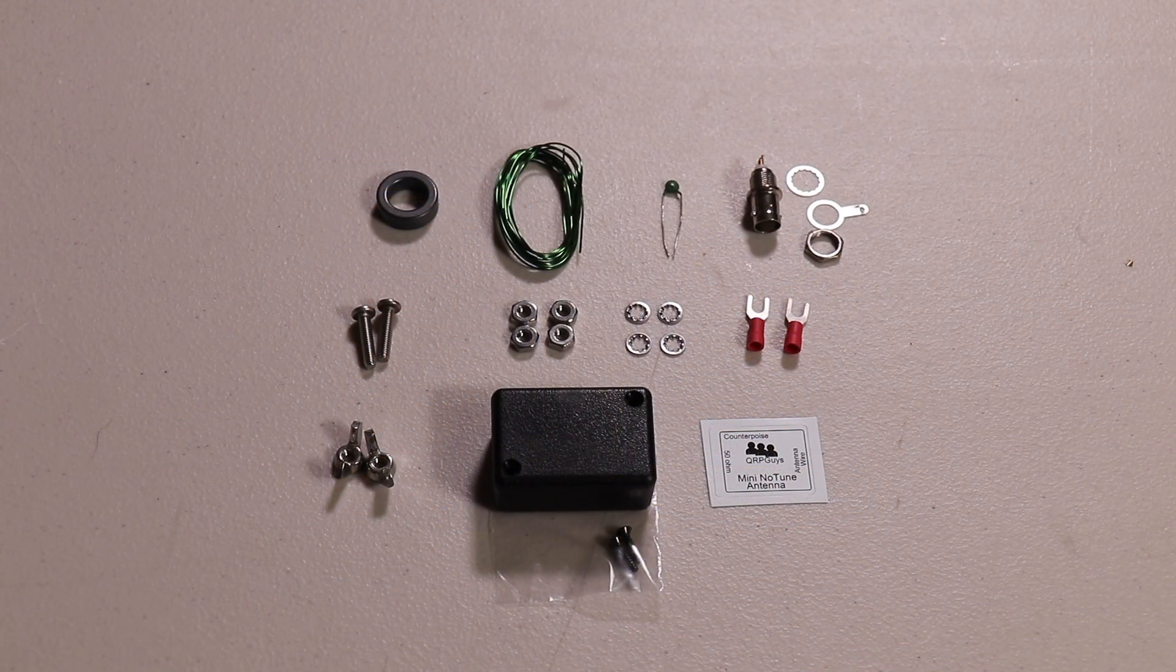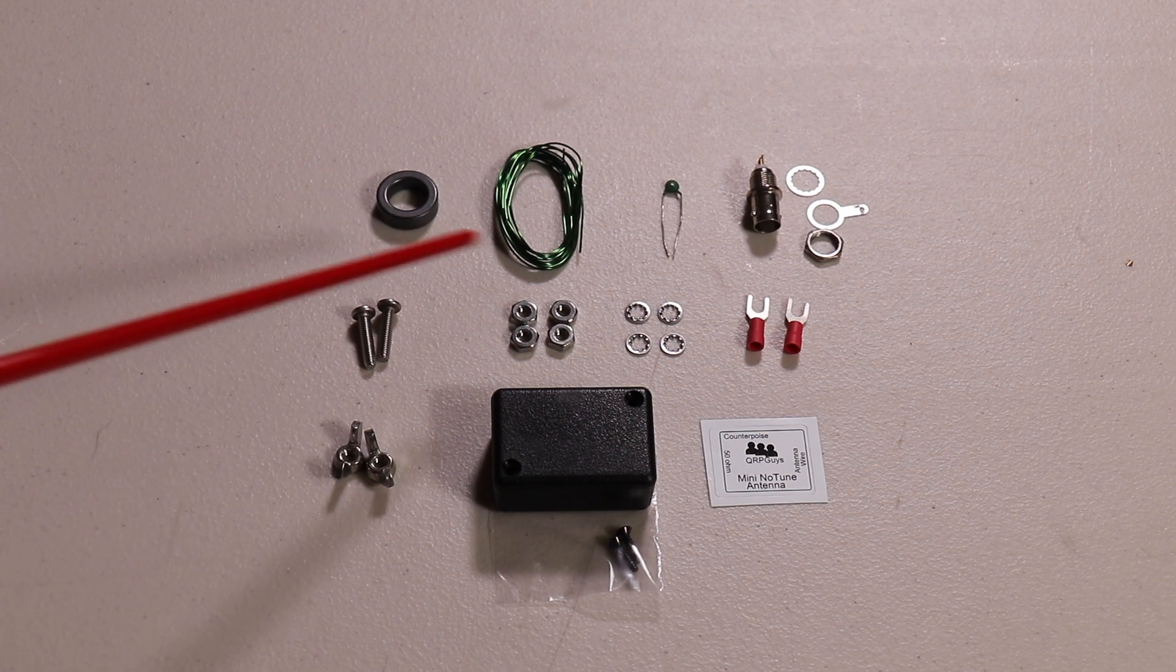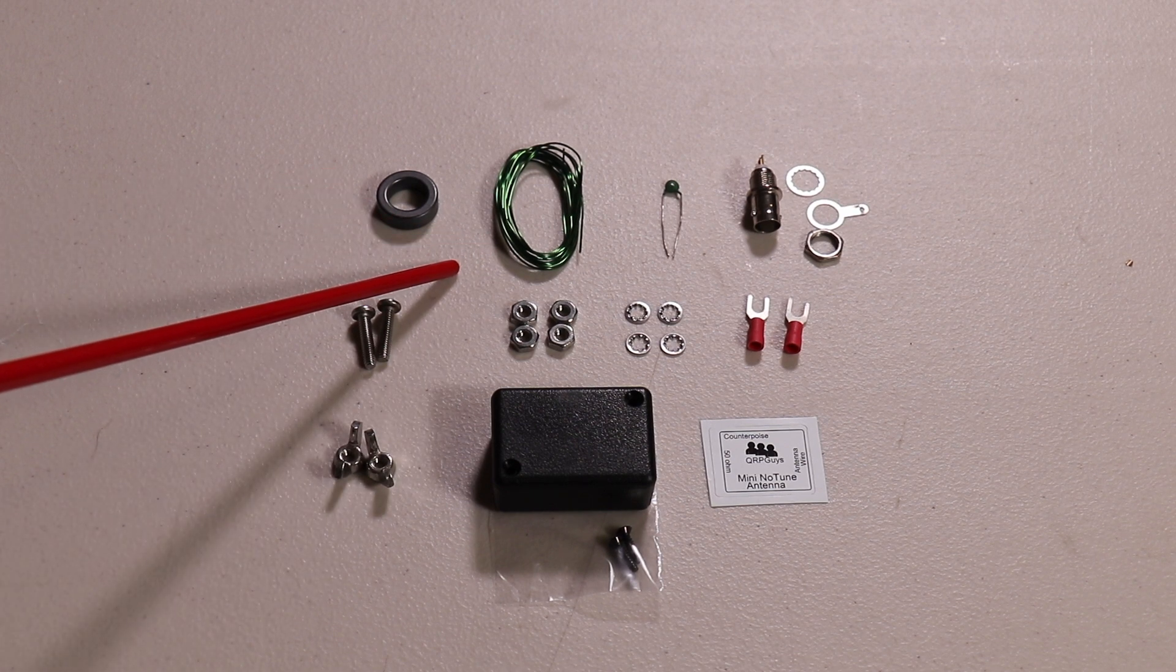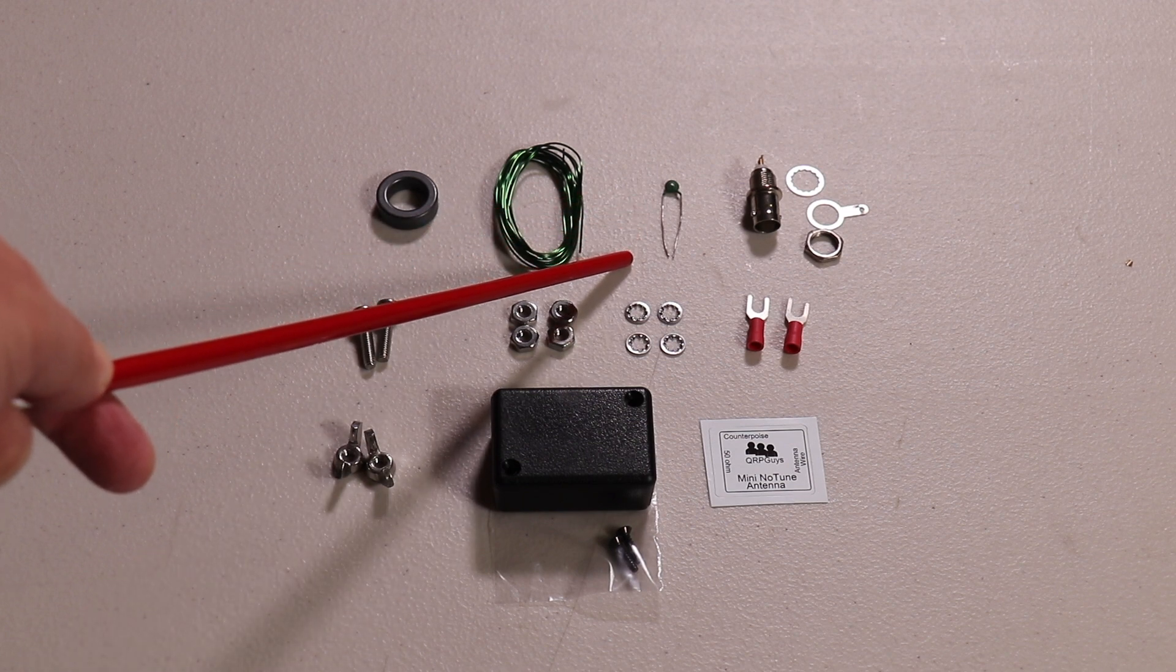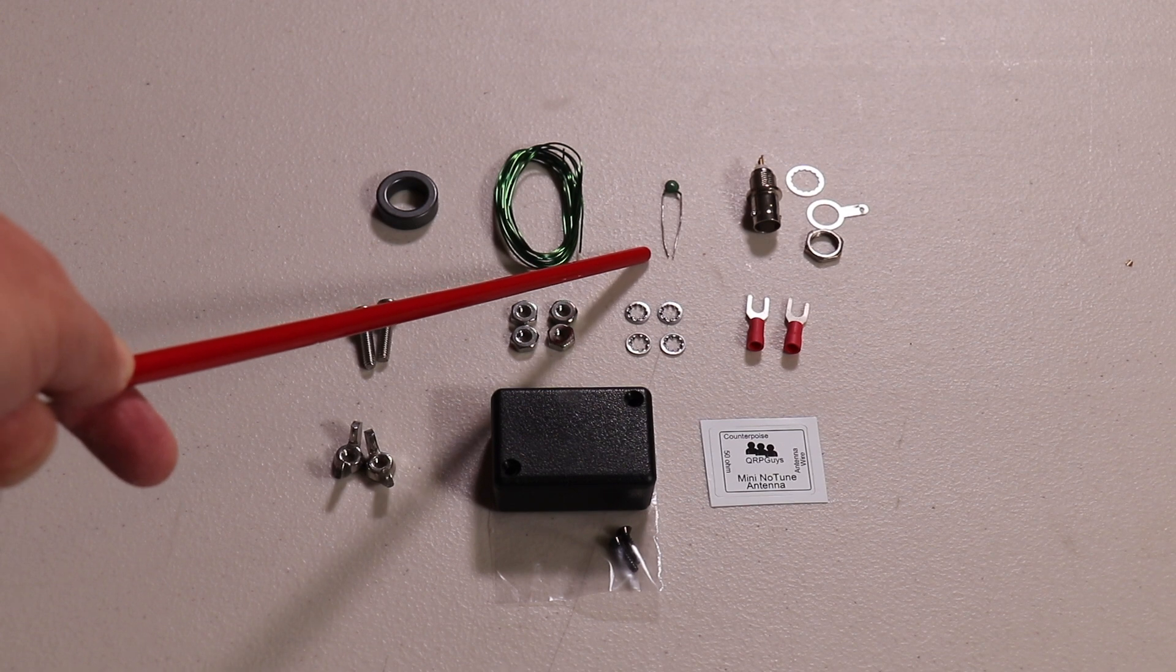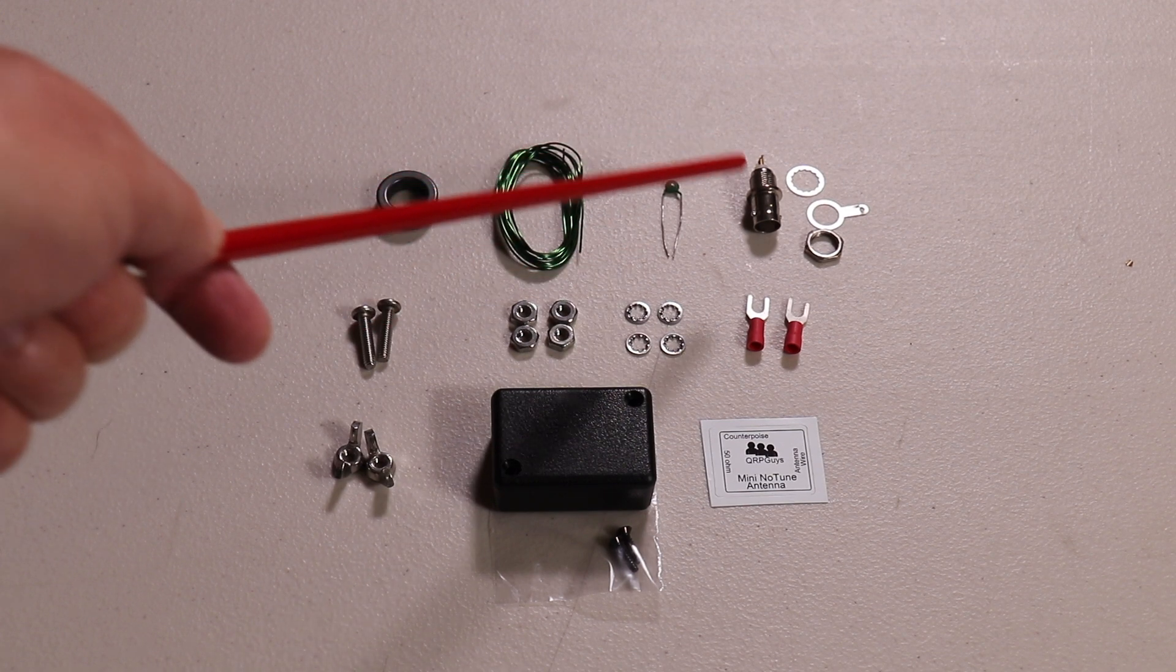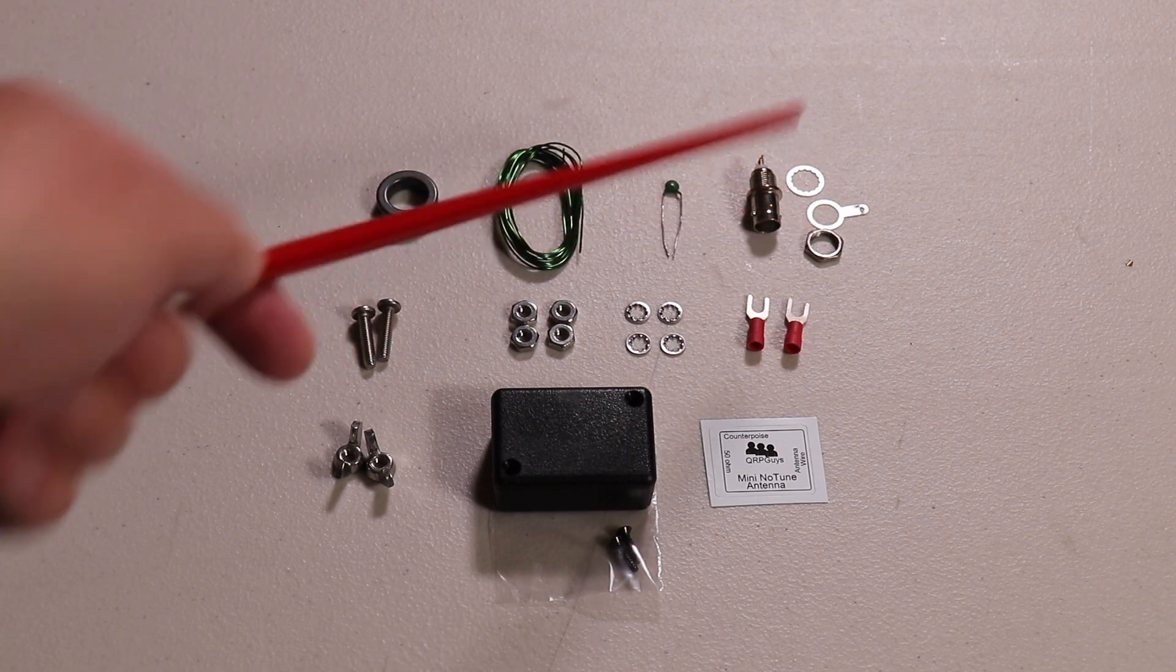In the kit you get a T1 FT8243 toroid, 60 inches of 22 gauge magnet wire. Ceramic capacitor is either going to be marked with 151, 150K or 150P depending on the manufacturer. In my case it's 151. You get a female BNC connector and all its parts.